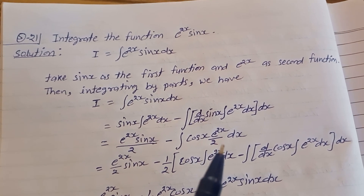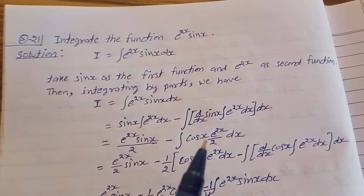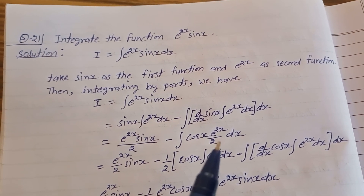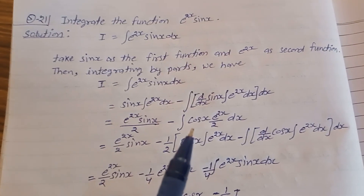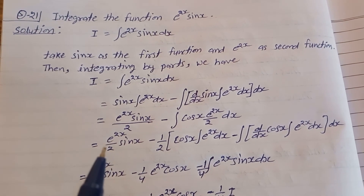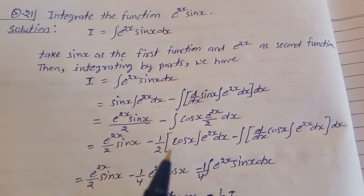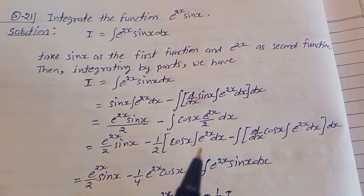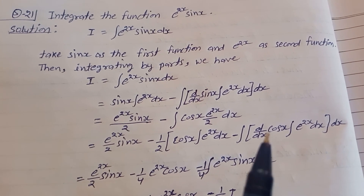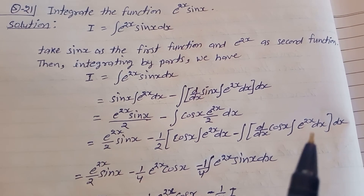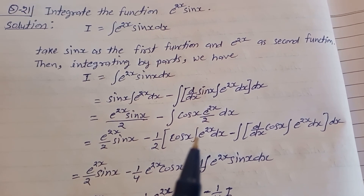For this remaining integral, we again apply integration by parts: cos(x) is taken as the first function and e^(2x) as the second function. So we get e^(2x)/2·sin(x), minus 1/2 times: cos(x) as it is times the integration of e^(2x) dx, minus the integration of d/dx of cos(x) times the integration of e^(2x) dx, all dx.